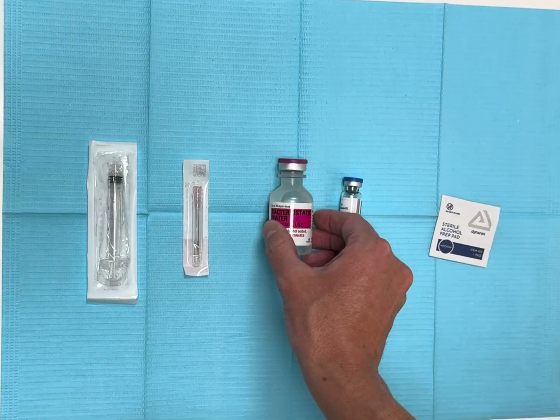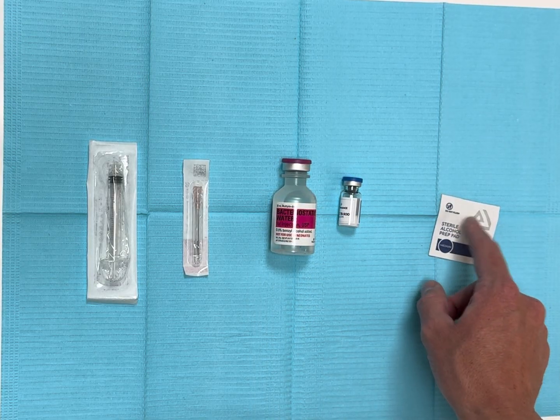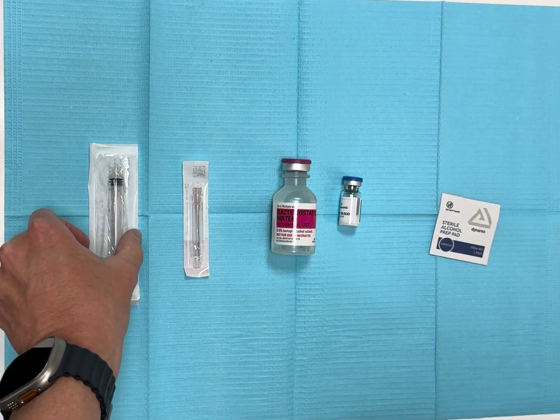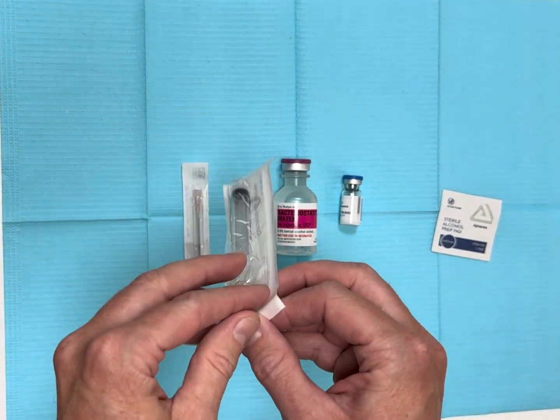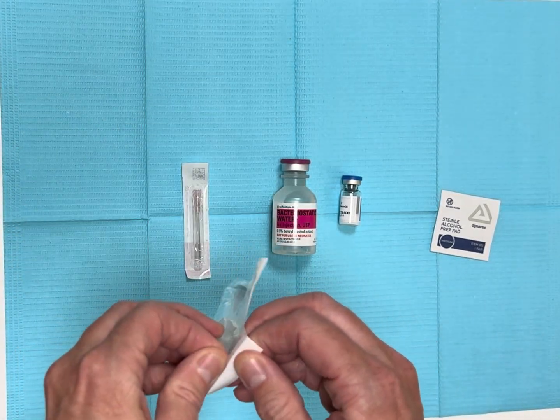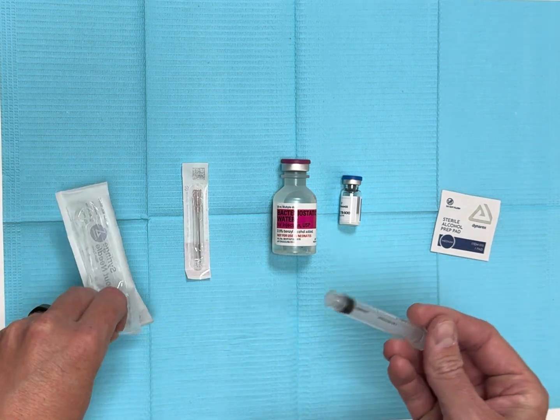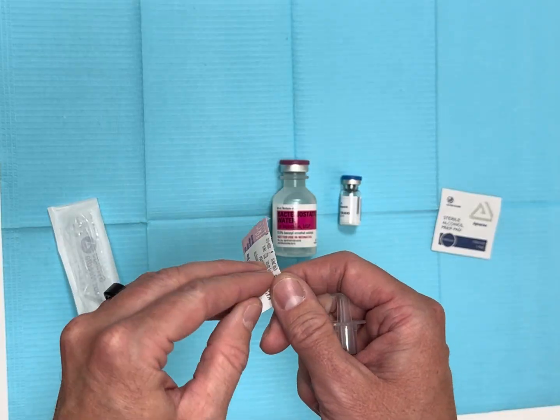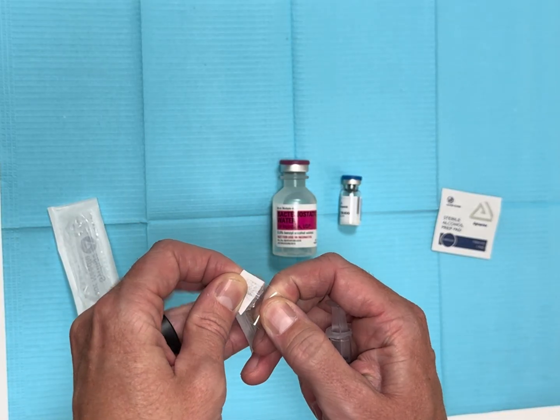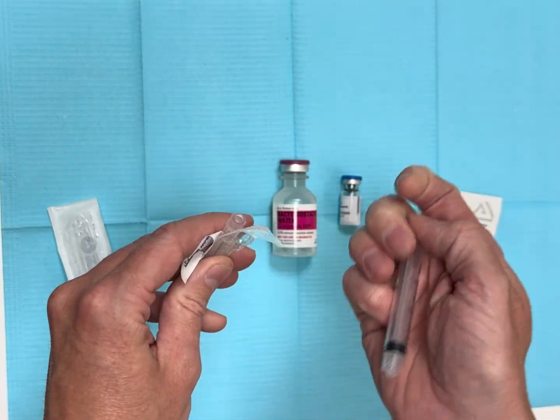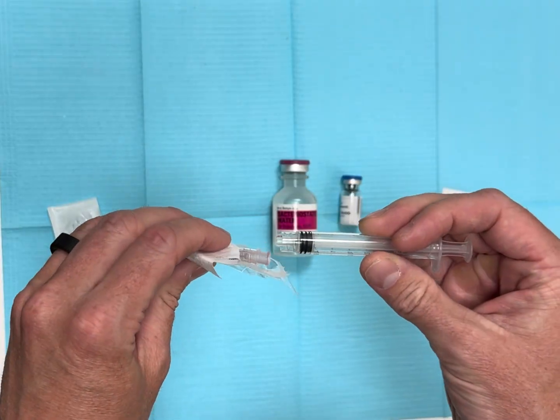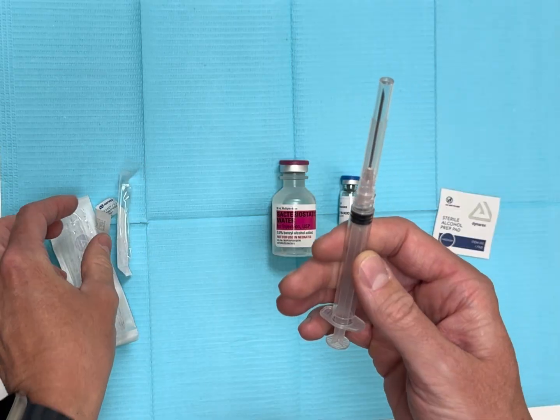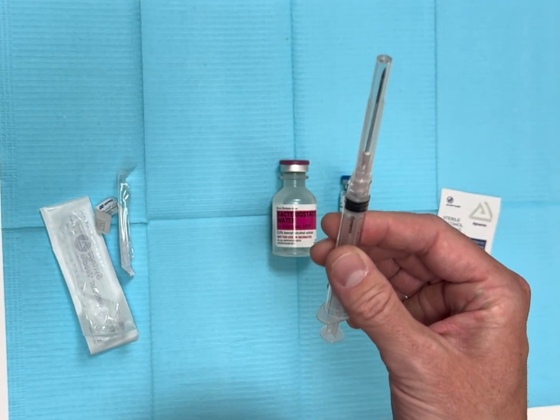The first step is we're going to open the syringe and you're going to open the needle. These attach through what's called a luer lock, so there's a twist on. Leave the cap on the needle until we're ready to use it and set that aside.